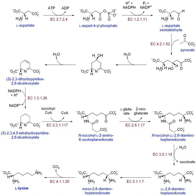The first step in purine biosynthesis is a condensation reaction performed by glutamine-PRPP amidotransferase, which transfers the amino group from glutamine to PRPP, forming 5-phosphoribosylamine. The following step requires activation of glycine by ATP. GAR synthetase condenses activated glycine onto PRPP, forming glycinamide ribonucleotide (GAR). GAR transformylase adds a formyl group to the amino group of GAR, forming formylglycinamide ribonucleotide (FGAR). FGAR amidotransferase catalyzes addition of a nitrogen group to FGAR, forming formylglycinamidine ribonucleotide (FGAM). FGAM cyclase then catalyzes ring closure via removal of a water molecule, forming the five-membered imidazole ring, 5-aminoimidazole ribonucleotide (AIR).